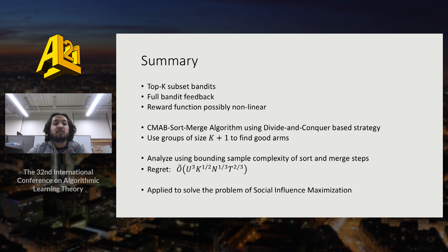To summarize, we consider the problem of top K subset bandits with full bandit feedback where the joint reward is a function which is possibly nonlinear in individual rewards and this may not allow us to invert individual arm rewards. We provide CMAB-SM algorithm which works using divide-and-conquer strategy and we bound the regret of this algorithm using L-square, K^(1/2), N^(1/3) and T^(2/3). We further apply this algorithm and empirically evaluate against the problem of social influence maximization and obtain that we are able to beat domain-specific algorithms with even lesser amount of data. Thank you.